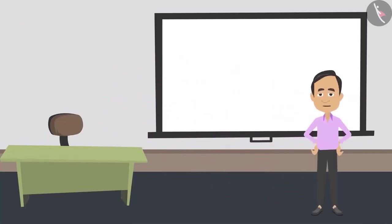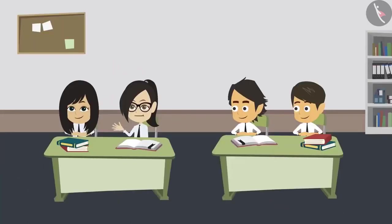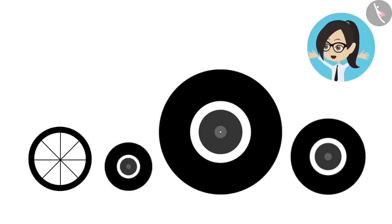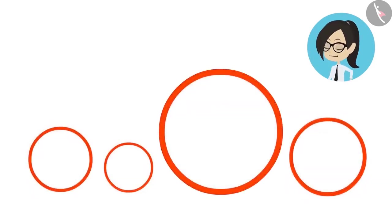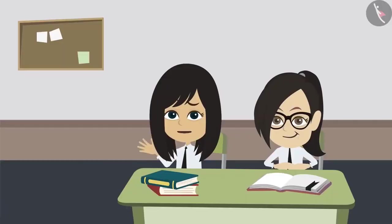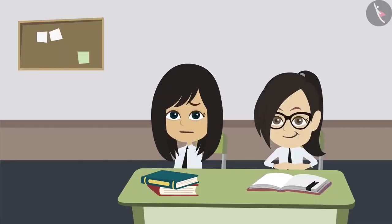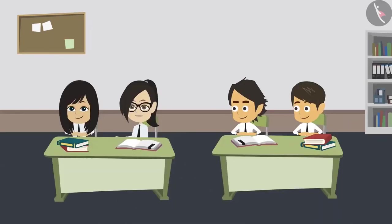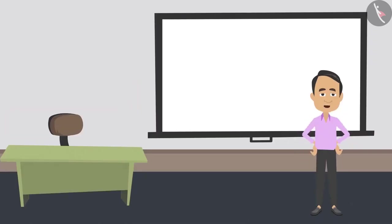But first tell me why do you want to know this? Sir, today we saw tractor, bicycle and scooter tires in the school parking lot. We have understood that all tires are circle shaped and there is a difference in their size. But to find out the difference, we should know how to measure those tires. So we want to learn how to measure a circle. Before measuring any circle, you have to understand what a circle is.